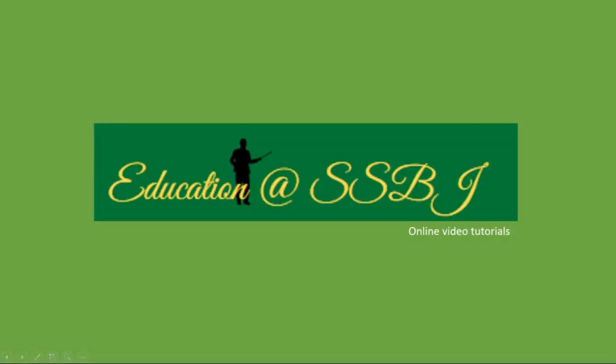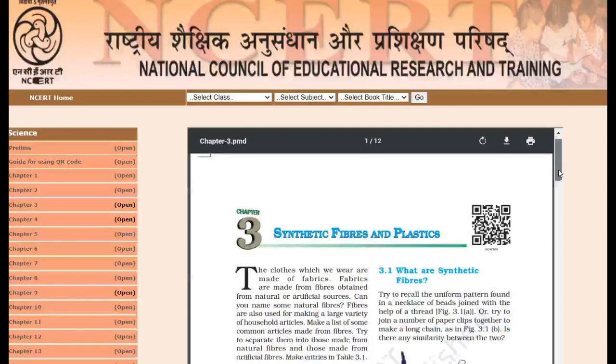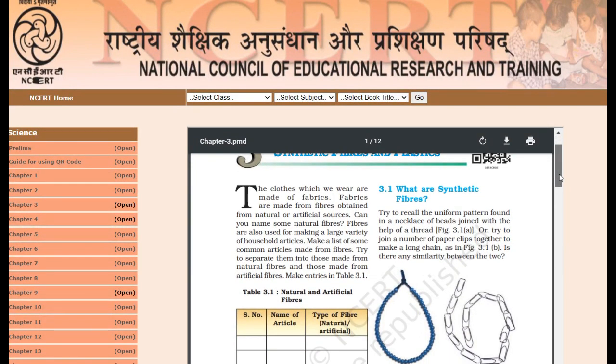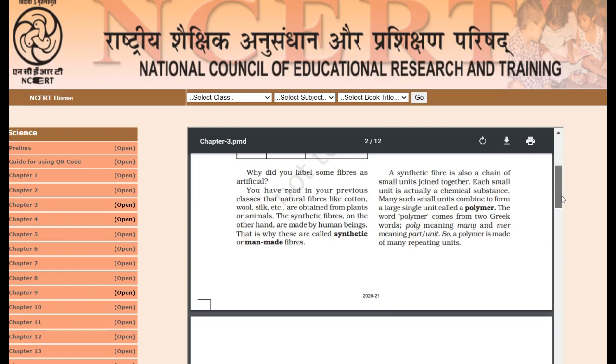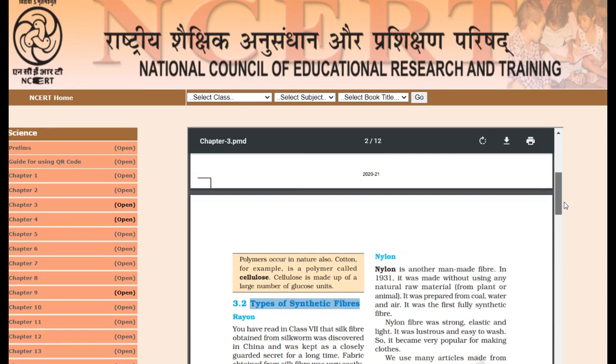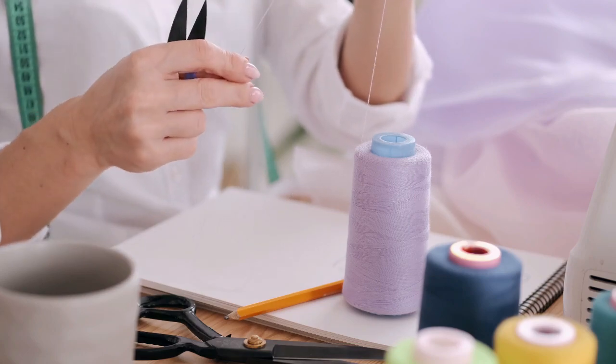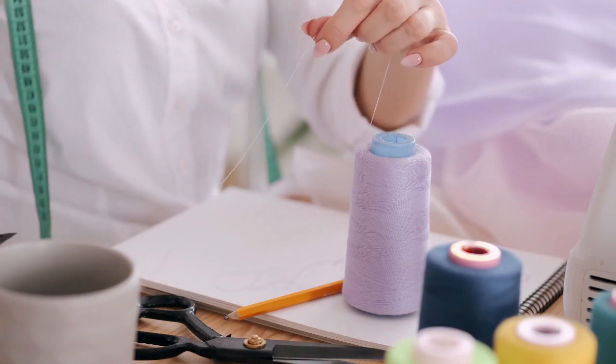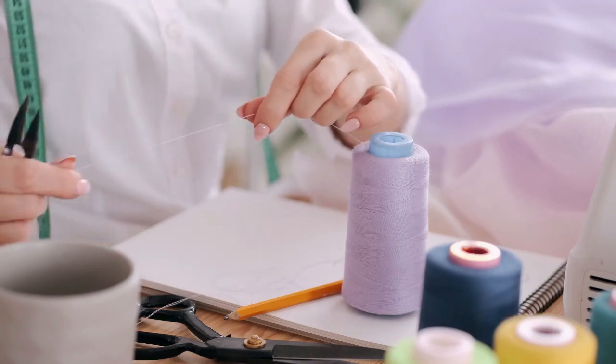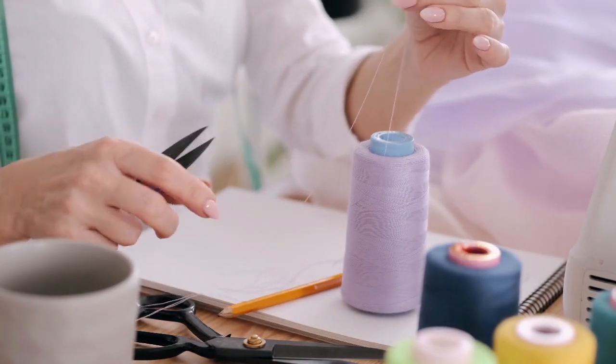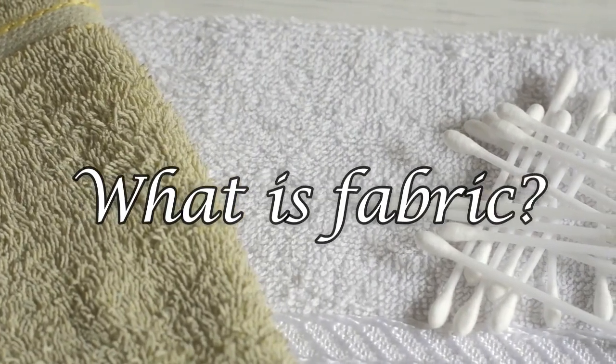Hello and welcome to education at SSBJ online video tutorials. Here we are with another chapter on synthetic fibers and plastics for Class 8 CBSE. We sometimes give examples of cotton fabric, silk fabric, linen fabric, wool fabric. What do you mean by fabric?